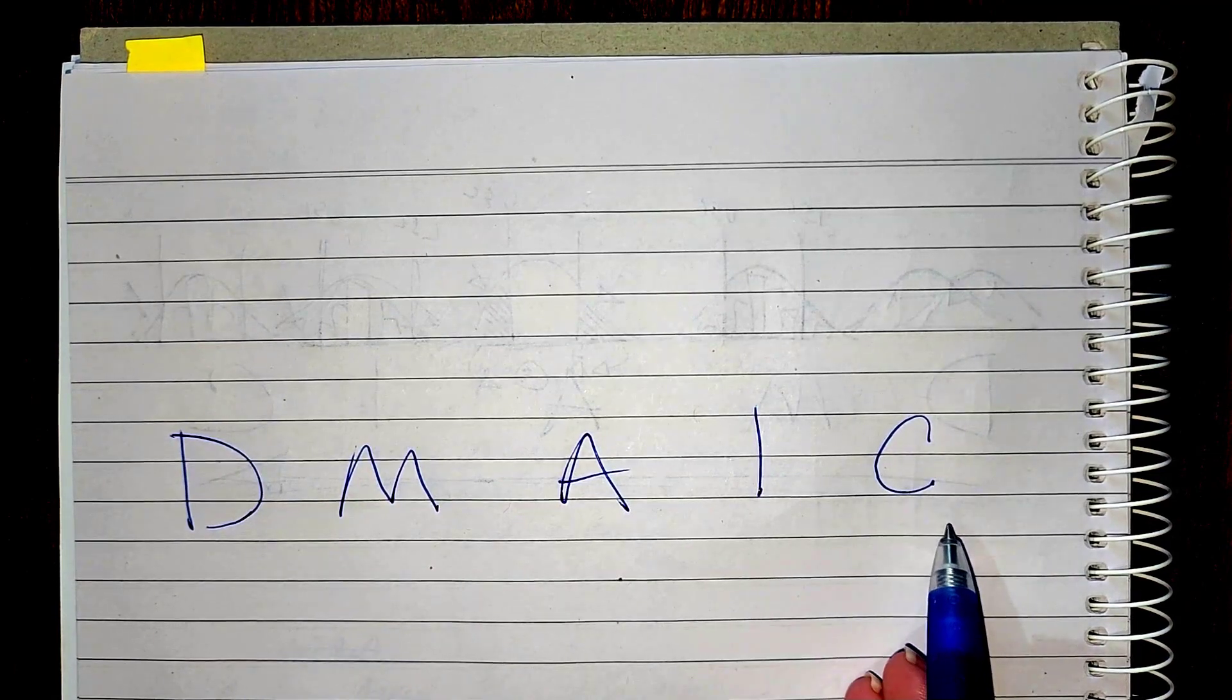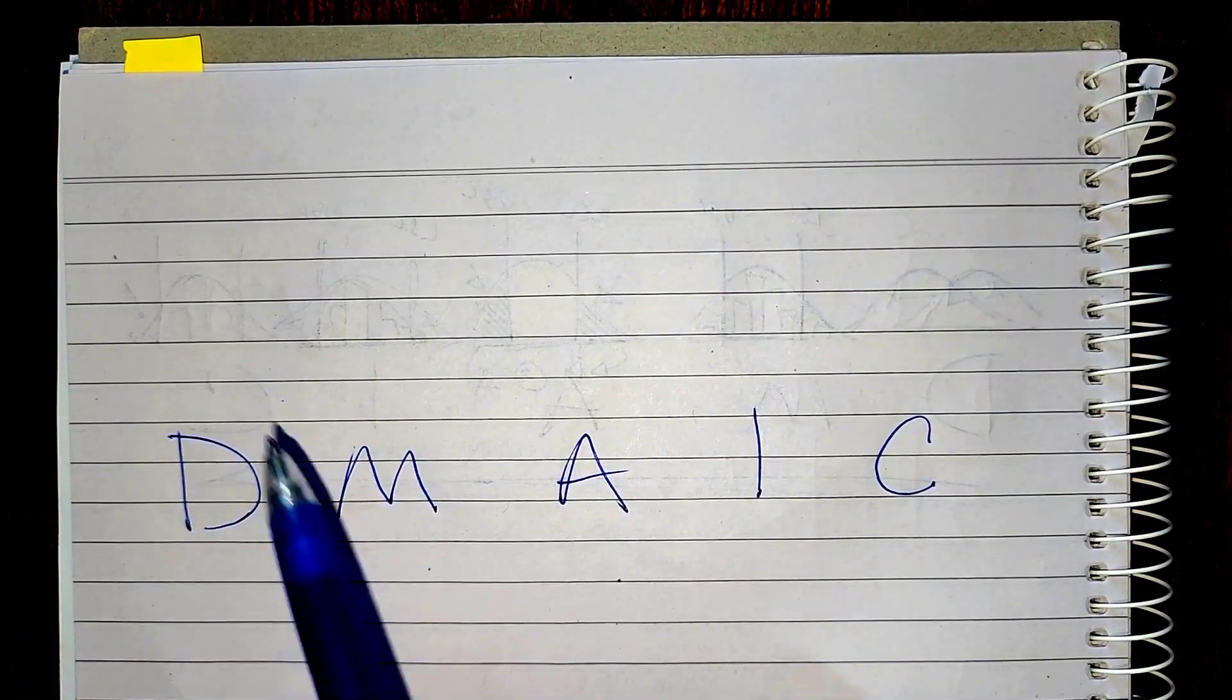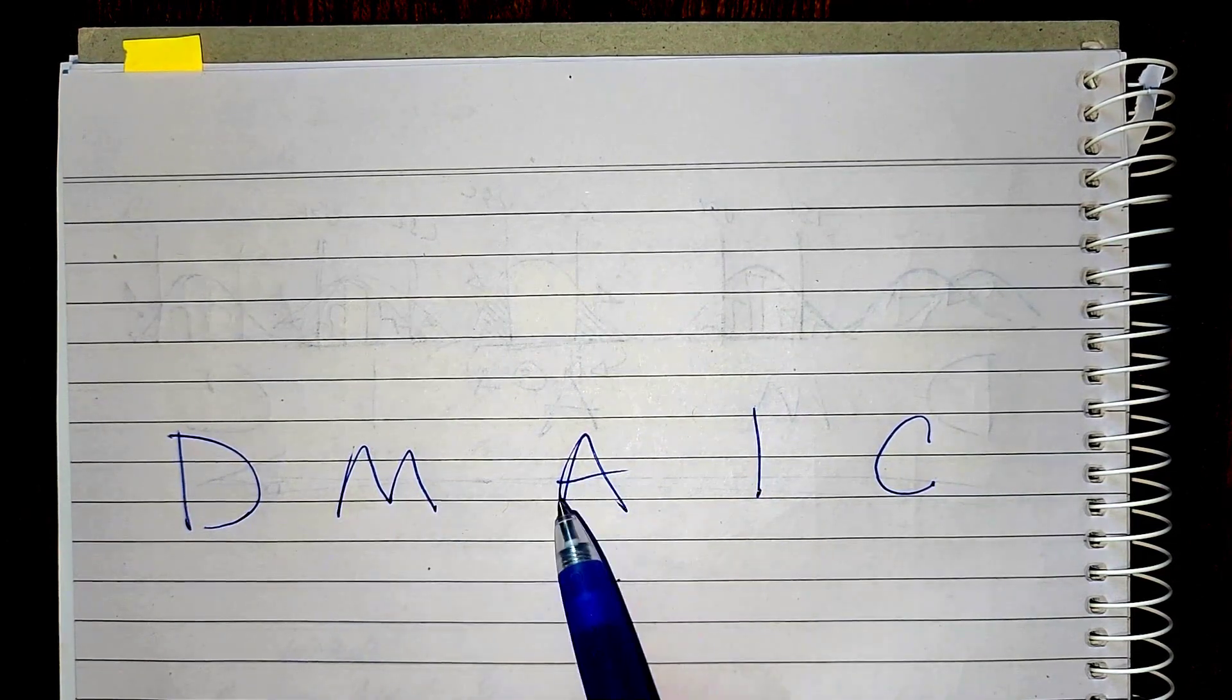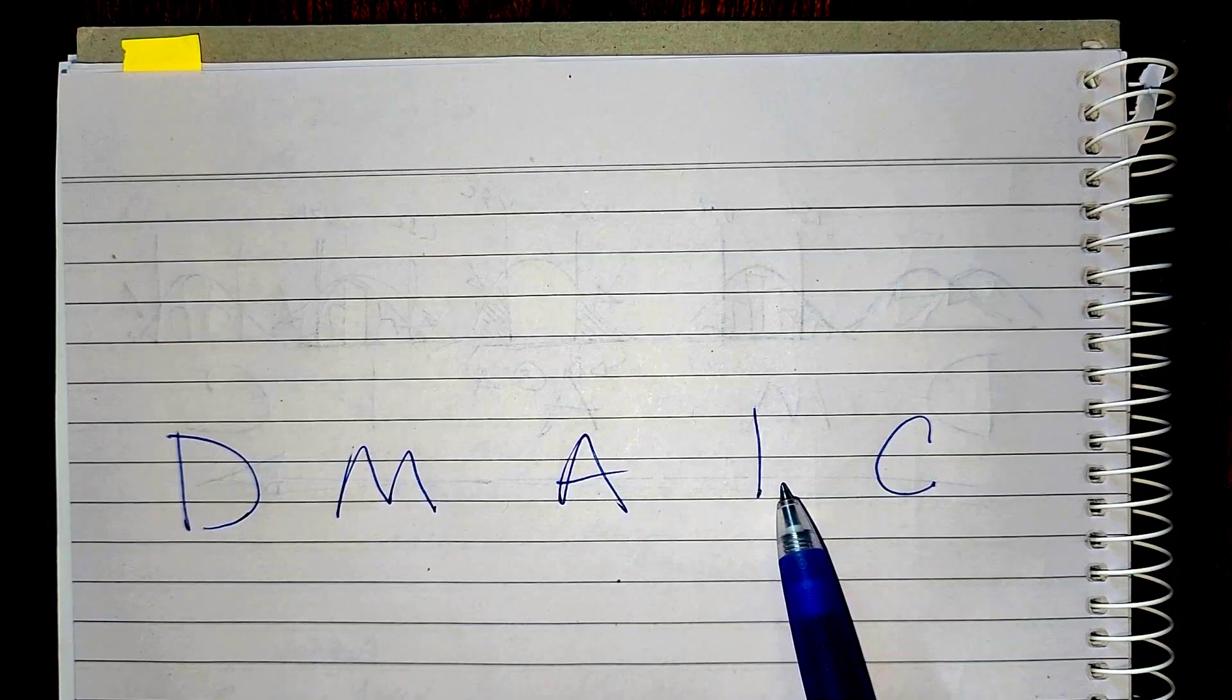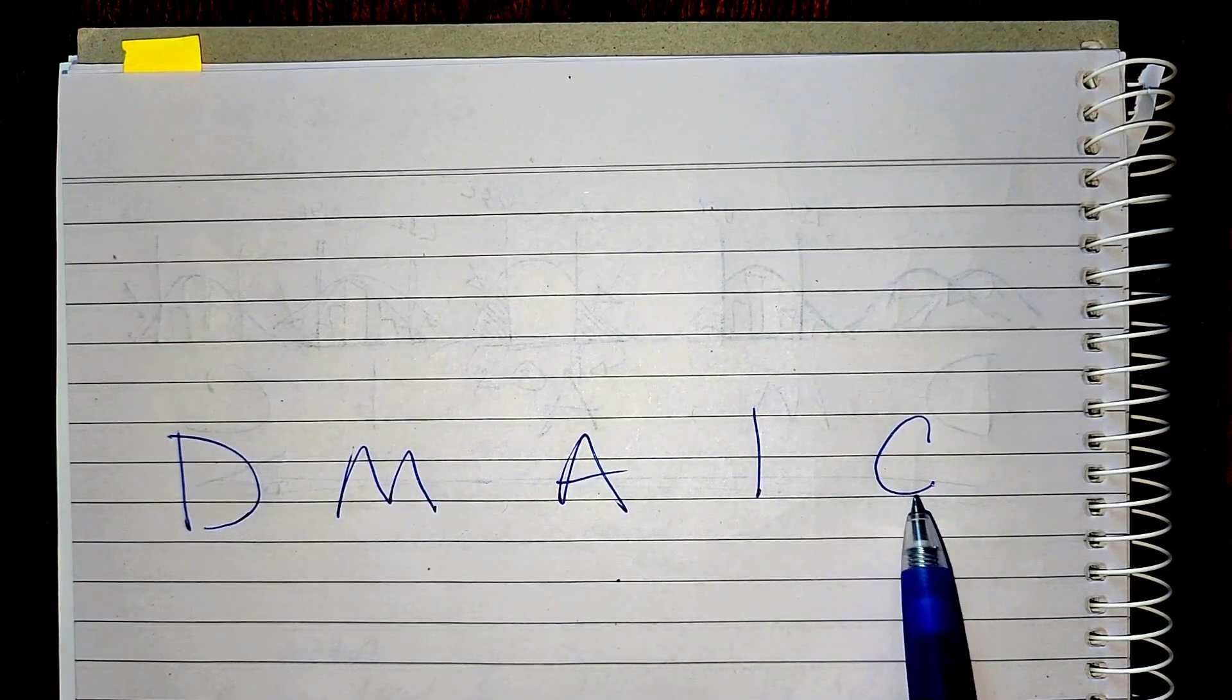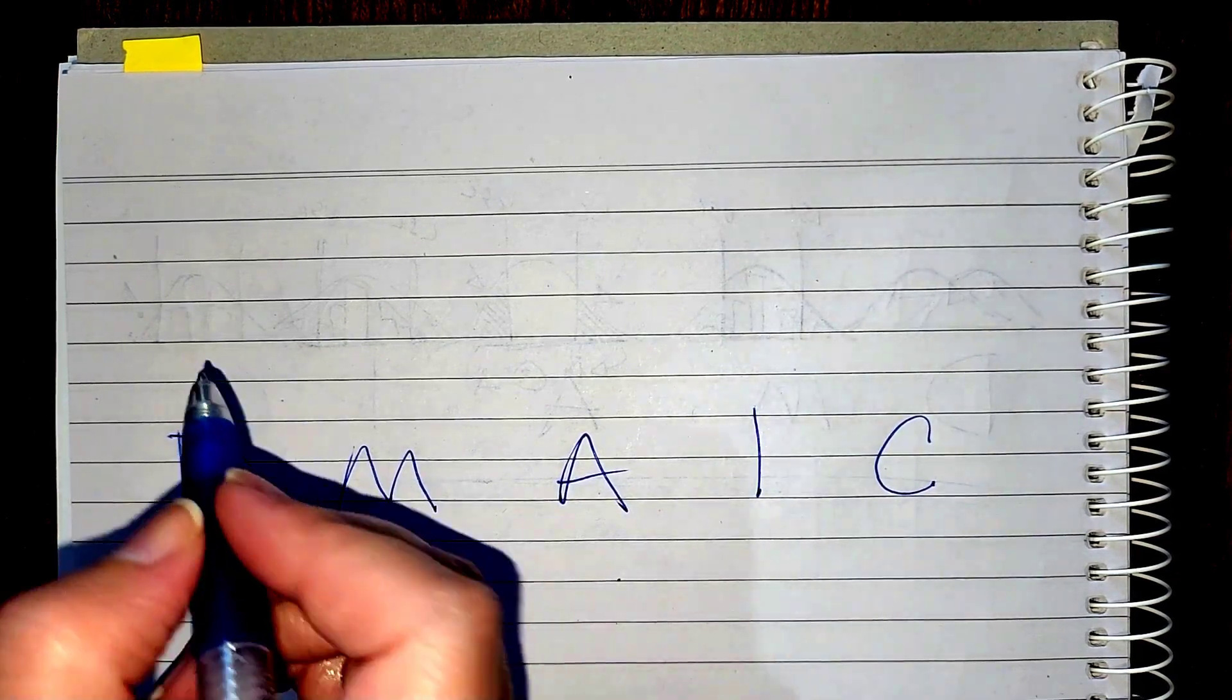When we go through these DMAIC phases, we're looking at our data, understanding where we want to go, knowing our baseline, analyzing for root causes, identifying, implementing, and validating our improvements, and making sure that we sustain or control those changes we've made.